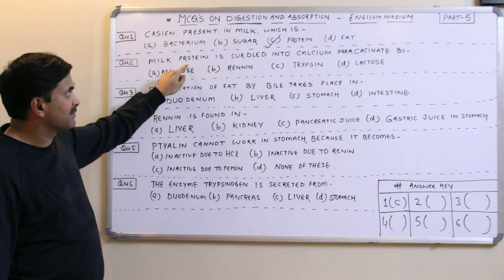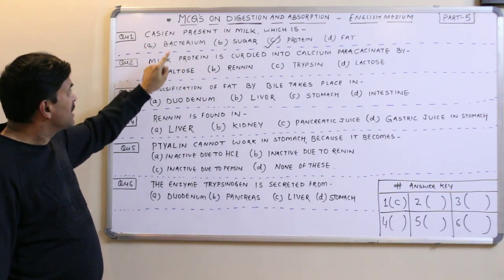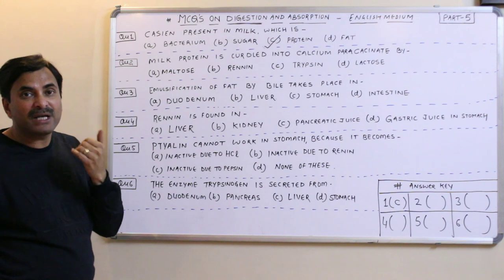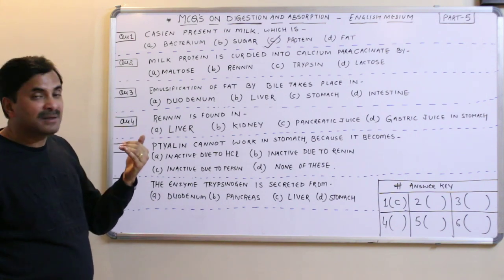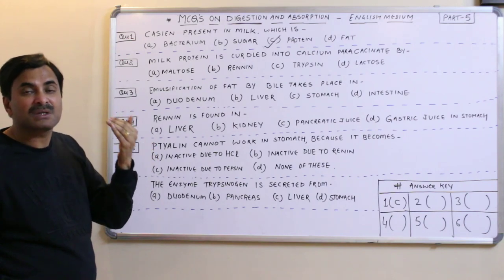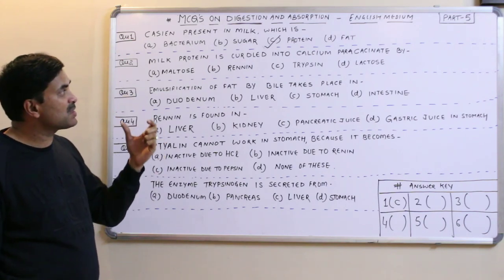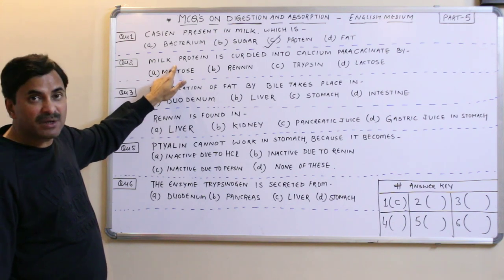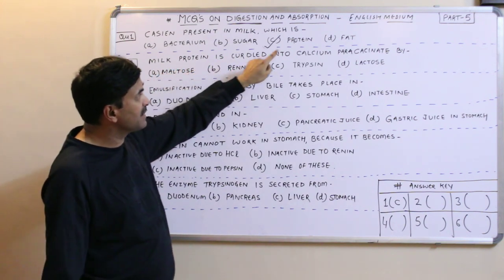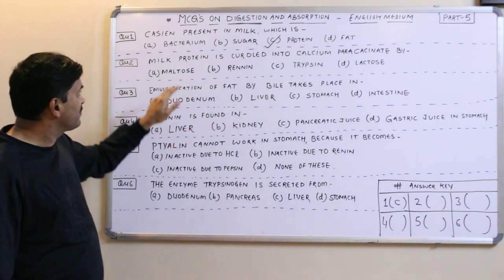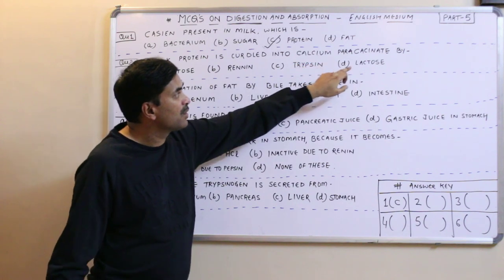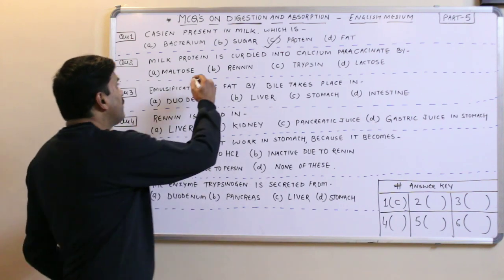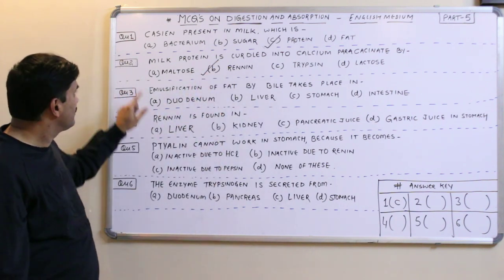Question number two: milk protein. We know that milk protein is casein, and milk protein is curdled into calcium paracacinate. Whenever we drink milk, it becomes curd-like in the stomach, and that curd-like substance is called calcium paracacinate. The question asks: casein is curdled into calcium paracacinate by maltose, renin, trypsin, or lactose? This curdling always occurs in the stomach with the help of renin.